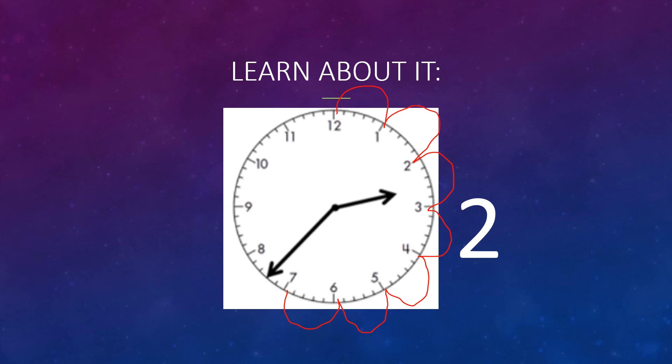And now we have to count by ones until we get to our minute hand. 1, 2. Okay, so we have 5, 10, 15, 20, 25, 30, 35, 36, and 37. Which means our clock says 2:37.